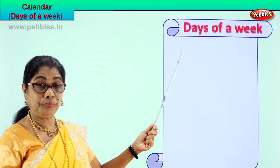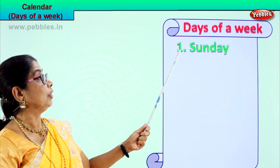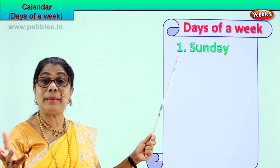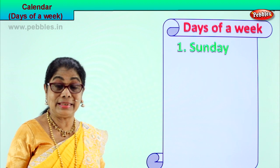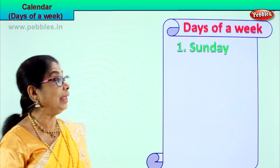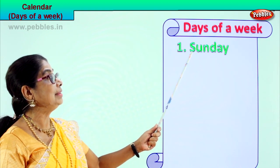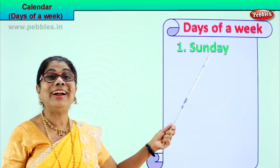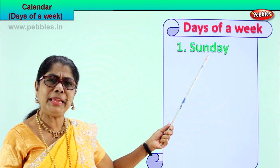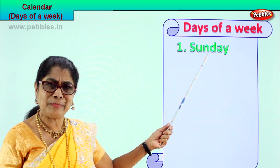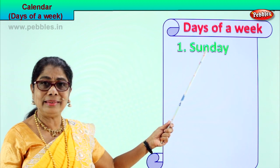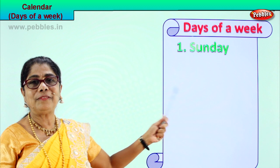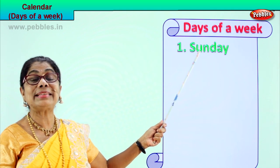See what I have for you. How many days are there in a week? Tell me. There are seven days. Which is the first day of the week? The first day of the week is Sunday. And you love the first day because it's a holiday. Now spell Sunday for me. S-U-N-D-A-Y. Sunday. First day of the week is Sunday.